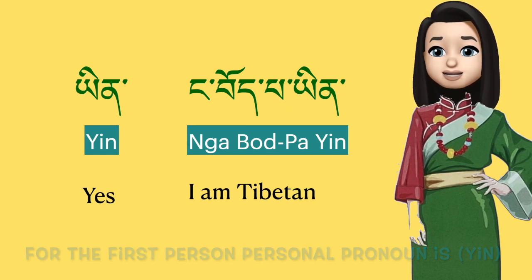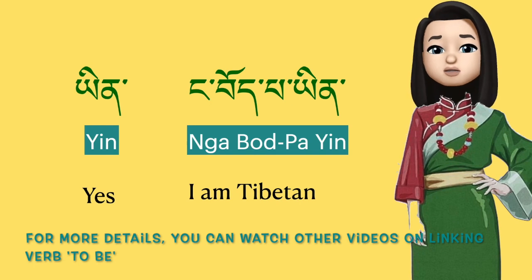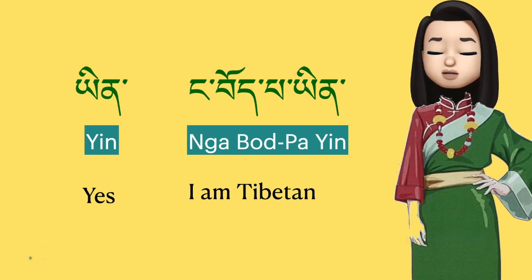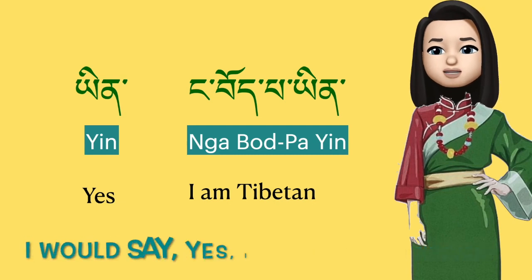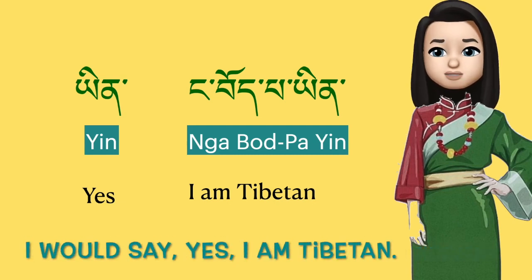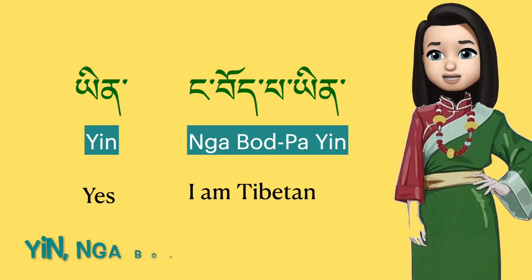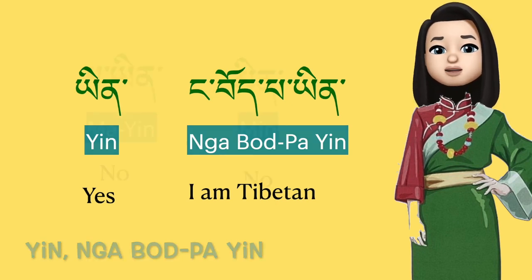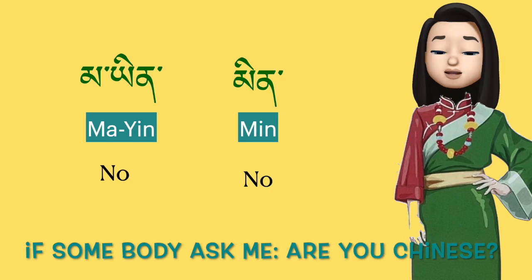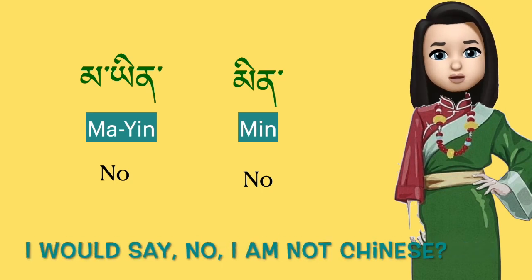The linking verb 'to be' in Tibetan for the first person personal pronoun is 'yin'. For more details you can watch the other videos on the linking verb 'to be'. So if you ask the question 'Are you Tibetan?', I would say 'Yes, I am Tibetan' — that is translated in Tibetan as 'yin', 'nga purpa yin'.